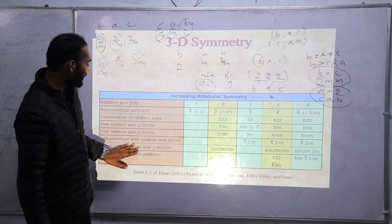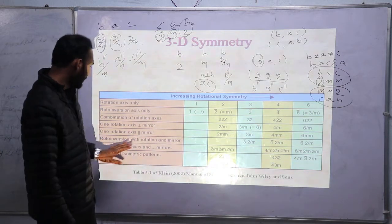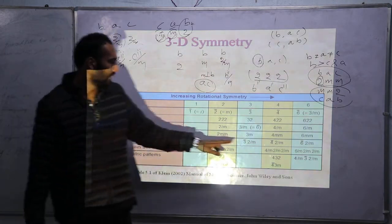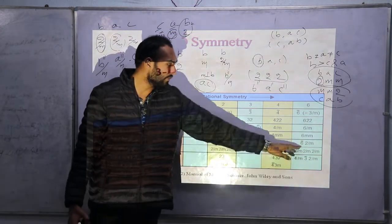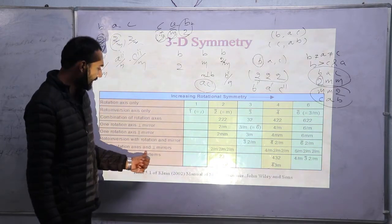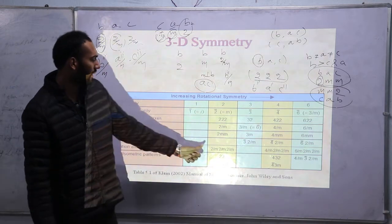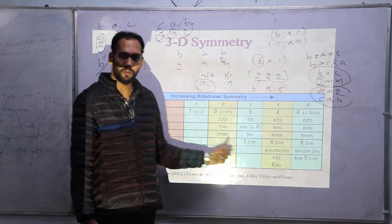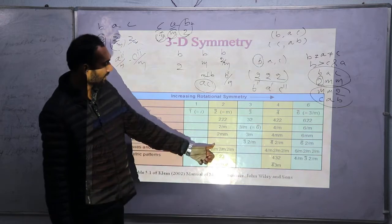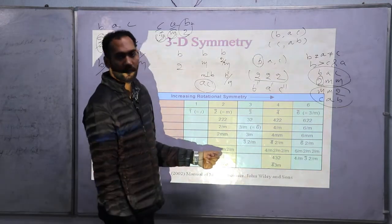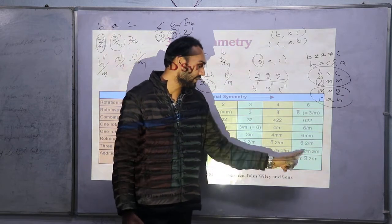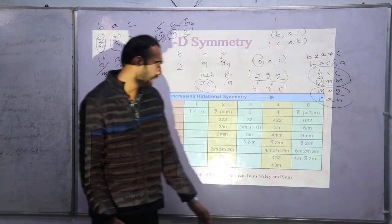Next: rotoinversion axis combined with rotation and mirror — 3-bar 2/M, 4-bar 2/M, 6-bar 2/M. Then three rotation axes each with a perpendicular mirror: for example, 2/M 2/M 2/M, meaning the B-axis has a 2-fold with perpendicular mirror, the C-axis has a 2-fold with perpendicular mirror, and the A-axis has a 2-fold with perpendicular mirror. Similarly: 4/M 2/M 2/M, and 6/M 2/M 2/M.